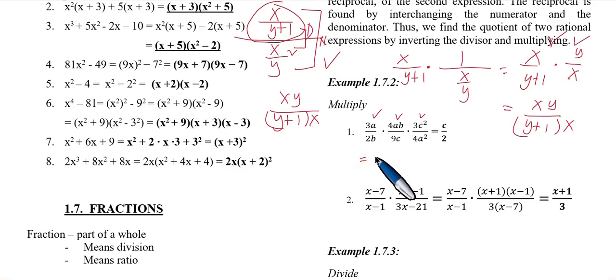Example number 1, multiply 3a over 2b with 4ab over 9c and 3c square over 4a square. First, multiply the coefficients. Actually, you can divide right away. But let's follow the concept from above. Multiply the numerators and denominators first. The result is 36a square bc square over 72a square bc. Then simplify. 36 over 72 is one half. a square cancels, b cancels, c square becomes c. The numerator is c over 2.